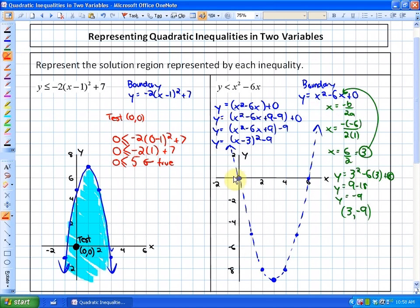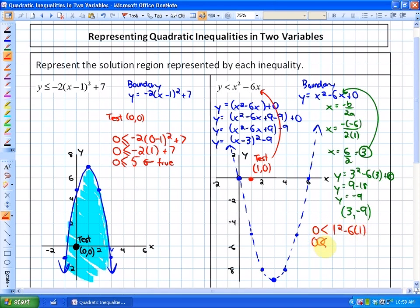As far as our test point goes, we cannot choose the point (0, 0), because it does not fall within one of the regions that's on the boundary. So I'm going to choose the test point here, (1, 0), which is not on the boundary. So if I put that into the original inequality, I would have is 0 < 1² - 6(1), or is 0 < -5?